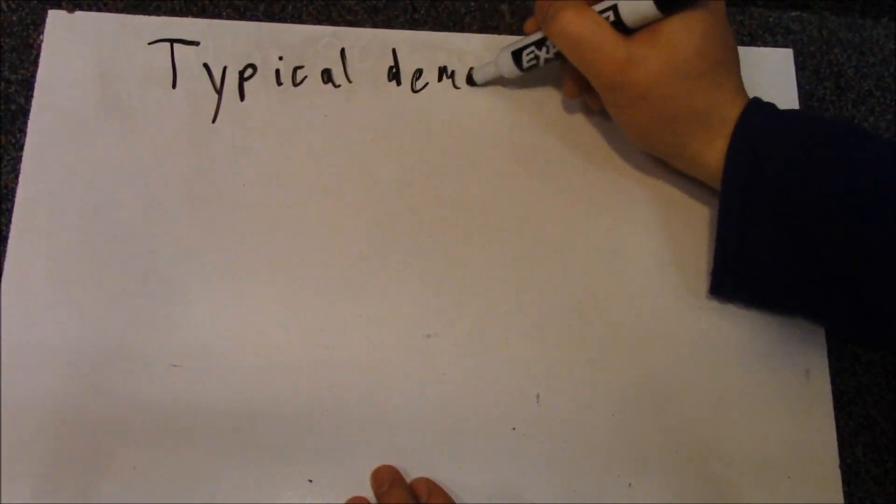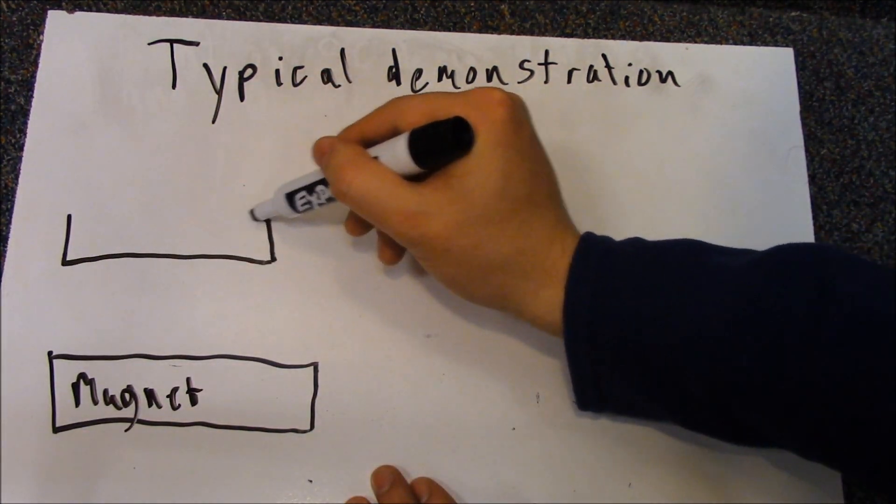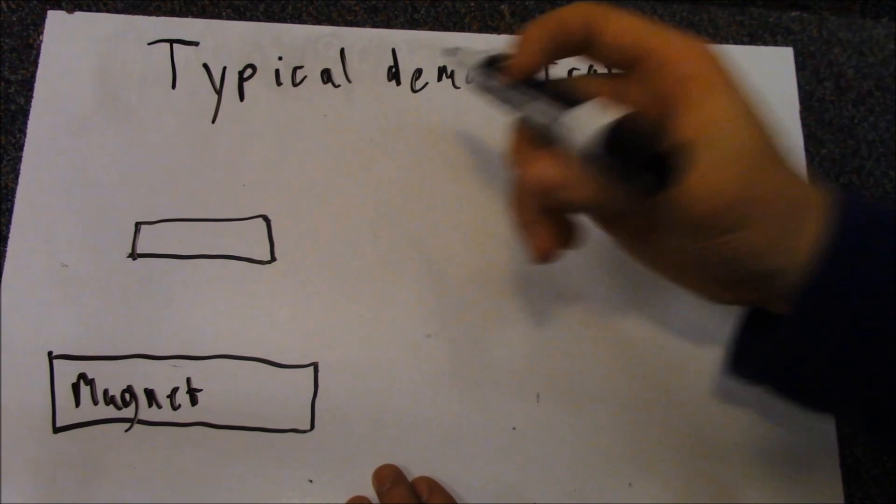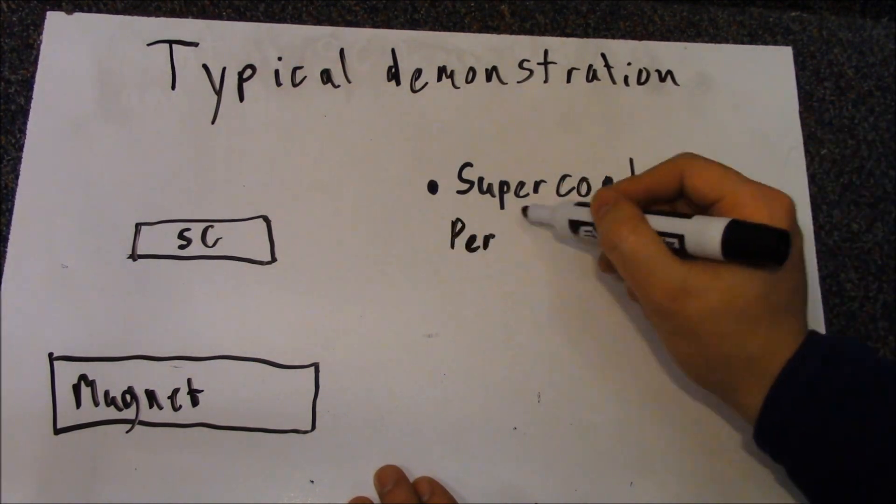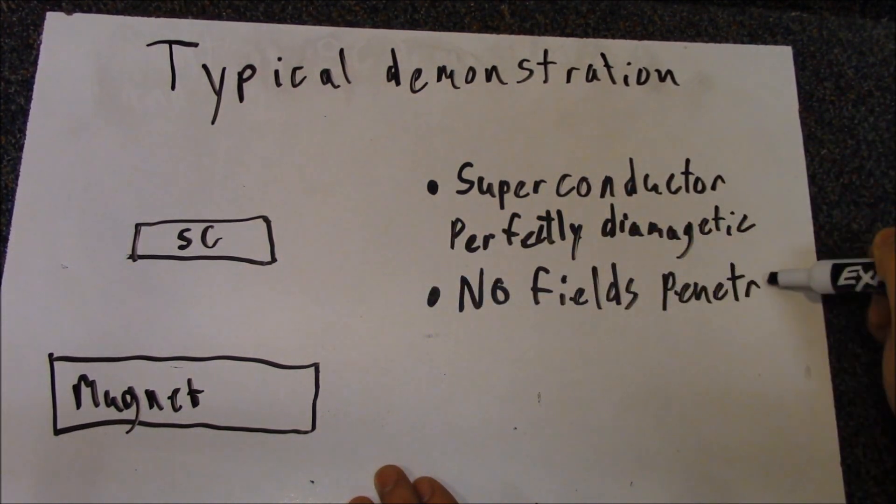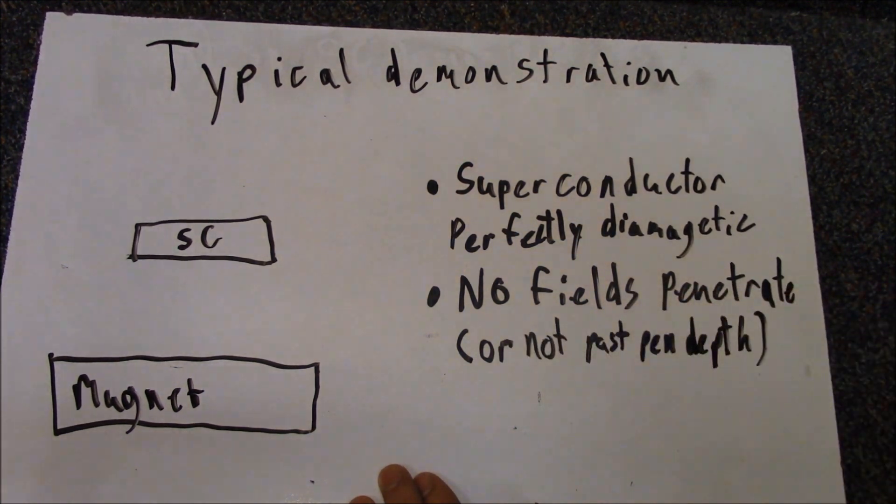I'll begin with the most basic Meissner effect demonstration. Here, the lecturer takes a magnet and places a superconductor that hovers above it. This is explained as the Meissner effect. The superconductor is a perfect diamagnetic material. Aside from a very thin outer layer, it expels all magnetic fields, causing it to levitate over the magnet.